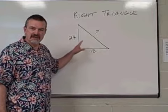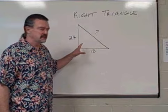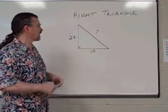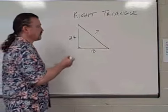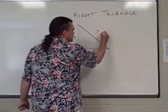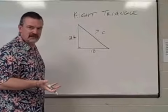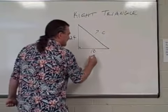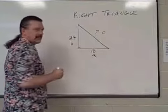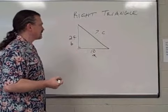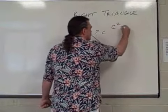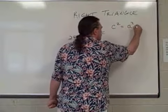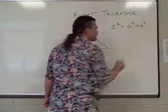We're going to use that theorem of Pythagoras to help us figure that out. Remember what that theorem says. If we label the hypotenuse C, which is always the way it's labeled, and we label the legs A and B, the formula says that C squared is always equal to A squared plus B squared.